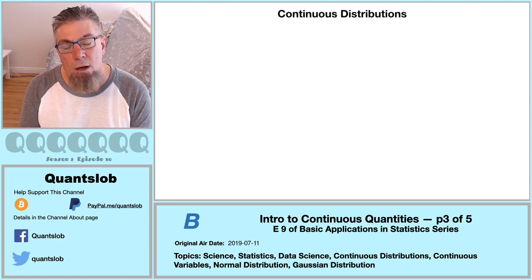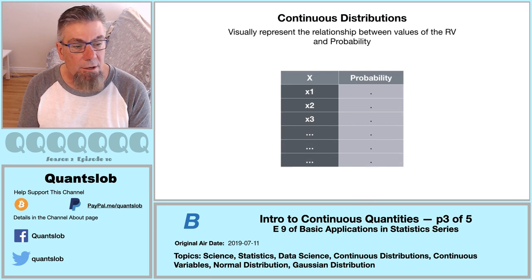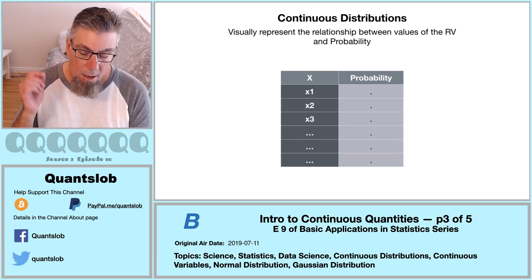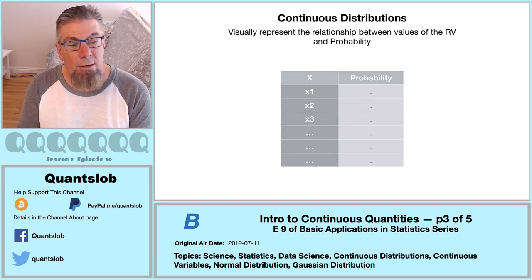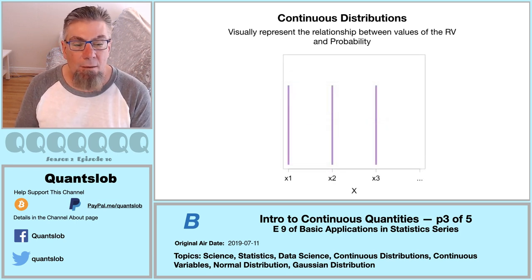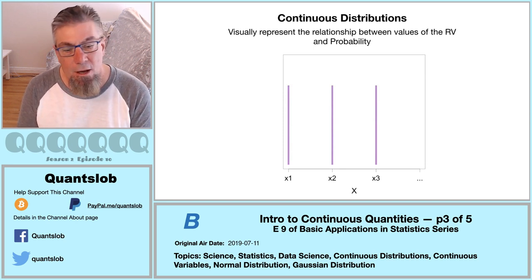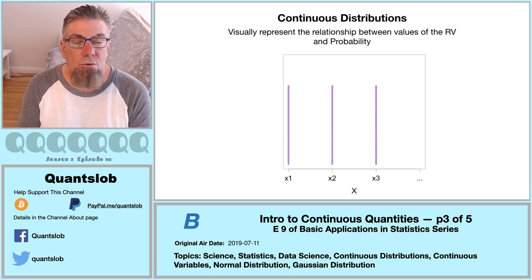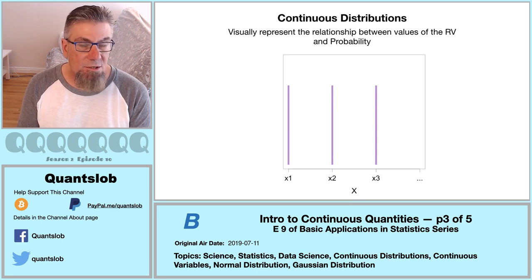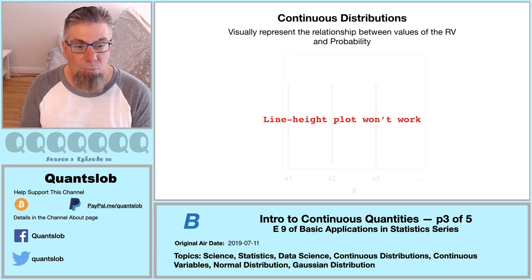Getting closer to continuous distributions now. I'm thinking of a particular continuous variable and want to convey it visually as we did with our discrete variable. With a variable with a discrete finite domain, we can visually show the relationship of domain values to respective probabilities with a table or line plot. However, a continuous variable has an infinite domain — this makes using a table to enumerate the domain essentially impossible. A line plot is also problematic: we can't plot an infinite number of lines, and if our domain is dense, no matter what x₁ and x₂ are, there are still an infinite number of domain values between them. So a line plot is out of the question — we're going to pick this up in part four.